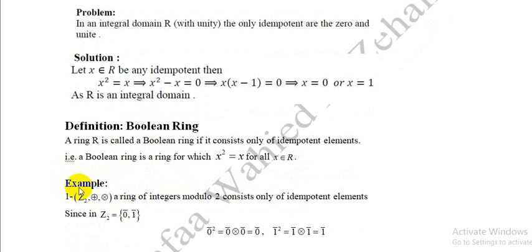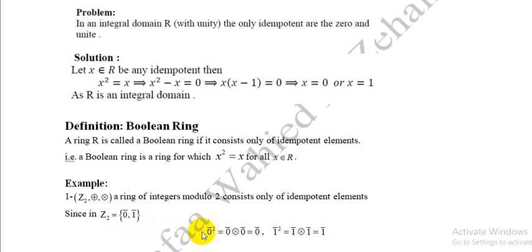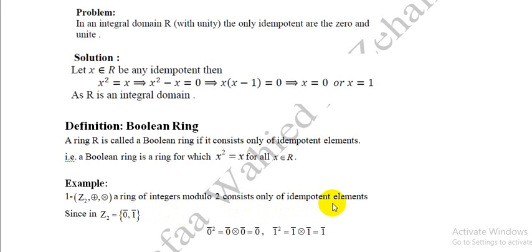Example: The ring of integers modulo 2 consists only of idempotent elements, since it contains only two elements, 0̄ and 1̄, and both satisfy the idempotent condition: 0̄² = 0̄ and 1̄² = 1̄. Therefore the integers modulo 2 form a boolean ring.